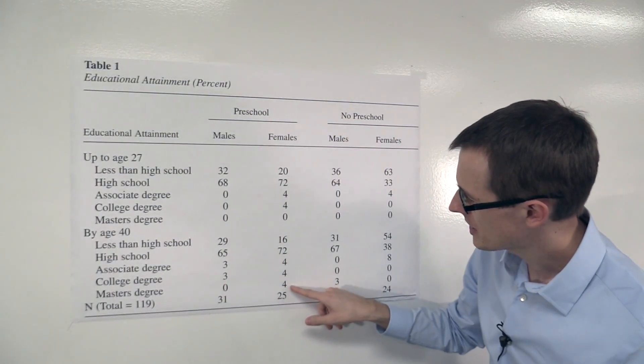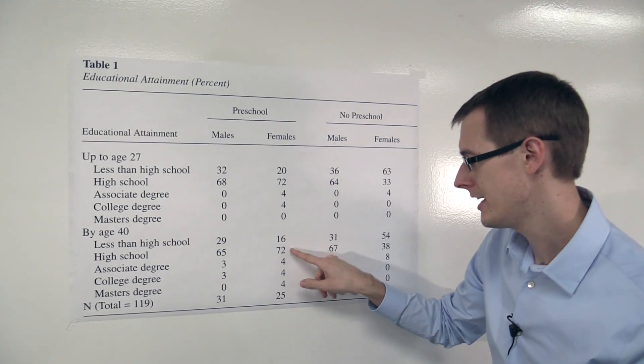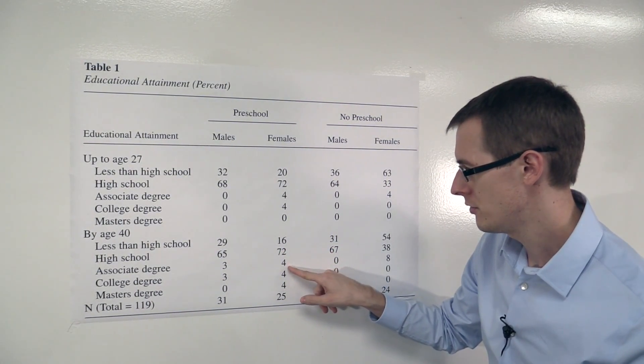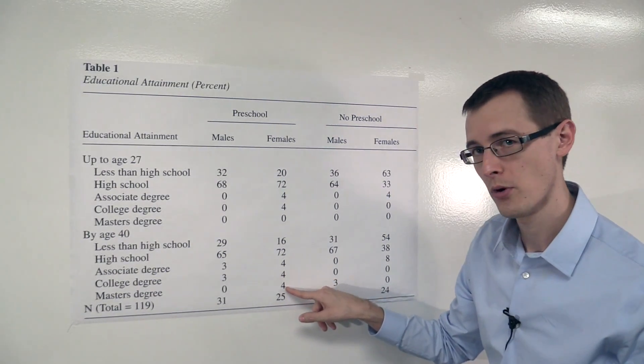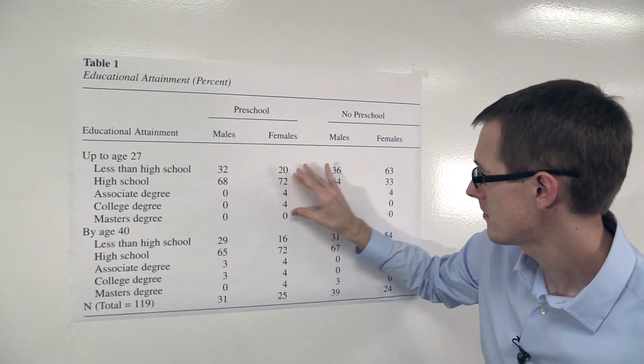Okay, and if you add these numbers up, you'll see it adds to 100 because they're percentages. 72 plus 16, that's 88, plus 4, 92, plus 4, 96, plus 4, 100. Okay, so each one of these is going to add up to 100 because they're percentages.